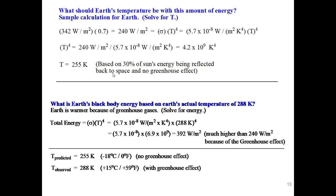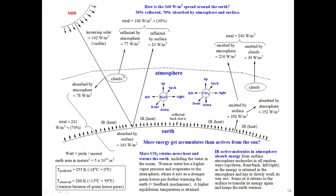That something else is greenhouse gases — water, CO₂, and methane — which pick up energy from Earth's surface and atmosphere and make the Earth warmer. Earth's actual temperature is about 288 Kelvin. Using Stefan-Boltzmann with 288 K gives 392 watts per meter squared, compared to the 240 W/m² from the sun alone. The extra 152 W/m² comes from greenhouse gases. So the greenhouse effect is responsible for raising Earth from -18°C to a livable temperature.